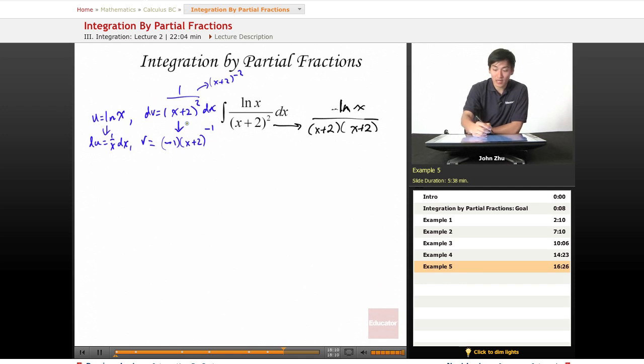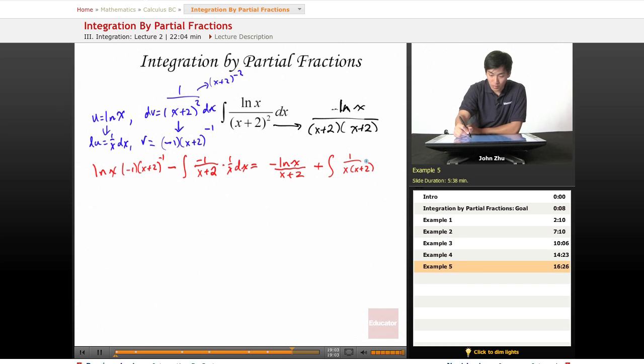So now we have our du and v term. Let's plug it in to our integration by parts. So u equals ln of x, v equals negative 1 over x plus 2 to the negative 1 minus the integral of v, which is going to be negative 1 over x plus 2 times du, which equals 1 over x dx. So let's rewrite this a little bit, negative ln of x divided by x plus 2 plus the integral of 1 over x times x plus 2 dx.